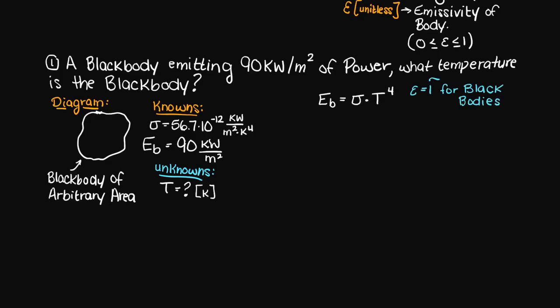Since we have stated that this is a black body, the emissivity term is omitted, since it would only be equal to 1. Now let's rearrange our equation and solve for the unknown, which we stated earlier is our temperature.